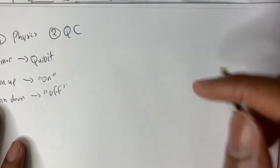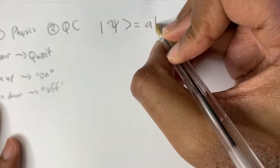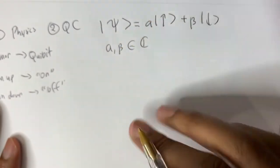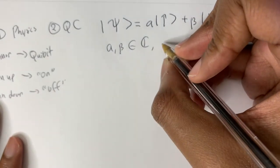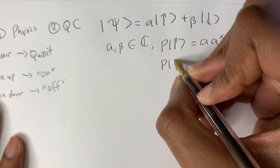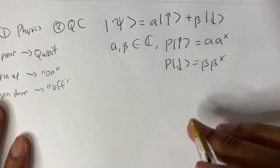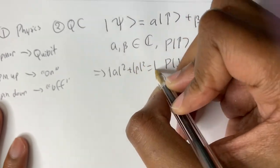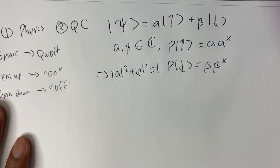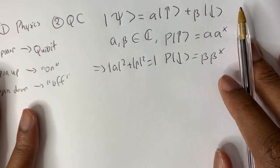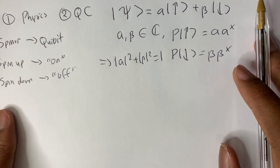A spinor is just a superposition of spin up and spin down, where alpha and beta are generally complex numbers. The probability of getting spin up on measurement is just alpha times alpha complex conjugate, and the probability of getting spin down is beta times beta conjugate. This directly implies that the modulus squared of alpha plus the modulus squared of beta should equal one — they should be normalized.